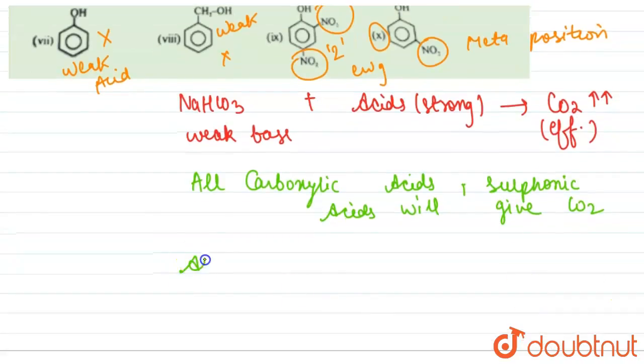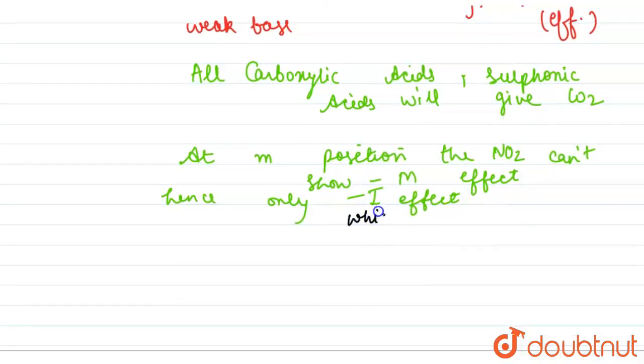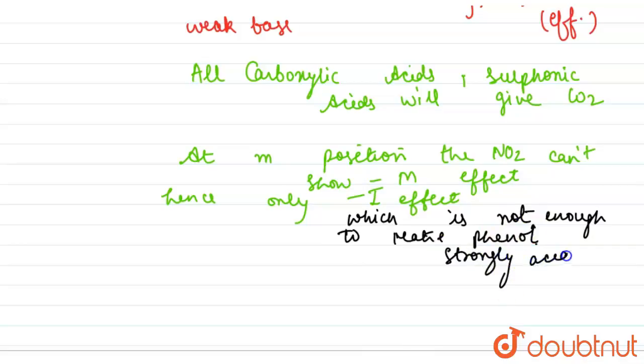At meta position, the NO₂ can't show minus M effect. Hence, only minus I effect is there and that is not enough to increase the acidic strength, which is not enough to make phenol strongly acidic.